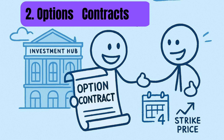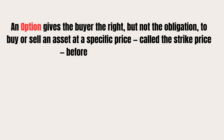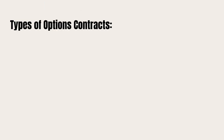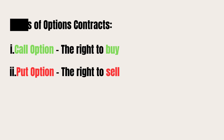Options contracts: an option gives the buyer the right, but not the obligation, to buy or sell an asset at a specific price — called the strike price — before a set expiration date. To buy an option, the investor pays a small fee up front, known as the premium. Think of it like a booking fee: you pay a small amount to reserve your right to make a move later. There are two types of options: a call option (the right to buy) and a put option (the right to sell).